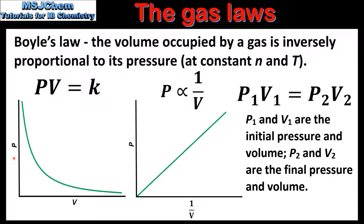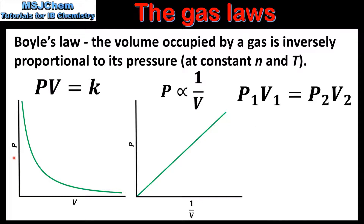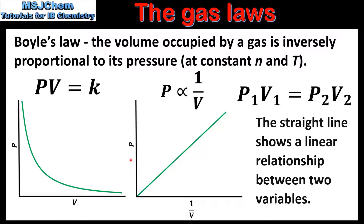Graphically, Boyle's law can be represented in two different ways. On the left we have a graph of pressure against volume — as pressure decreases, volume increases. On the right we have a graph of pressure against 1 over volume. The straight line produced shows that pressure is directly proportional to 1 over volume.